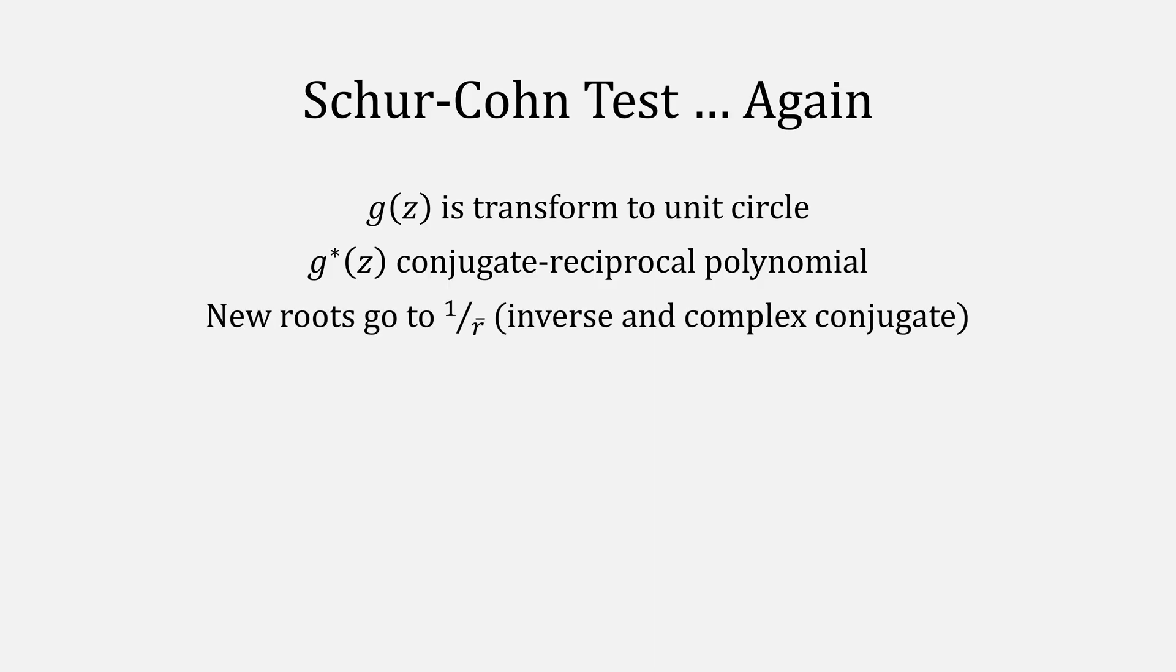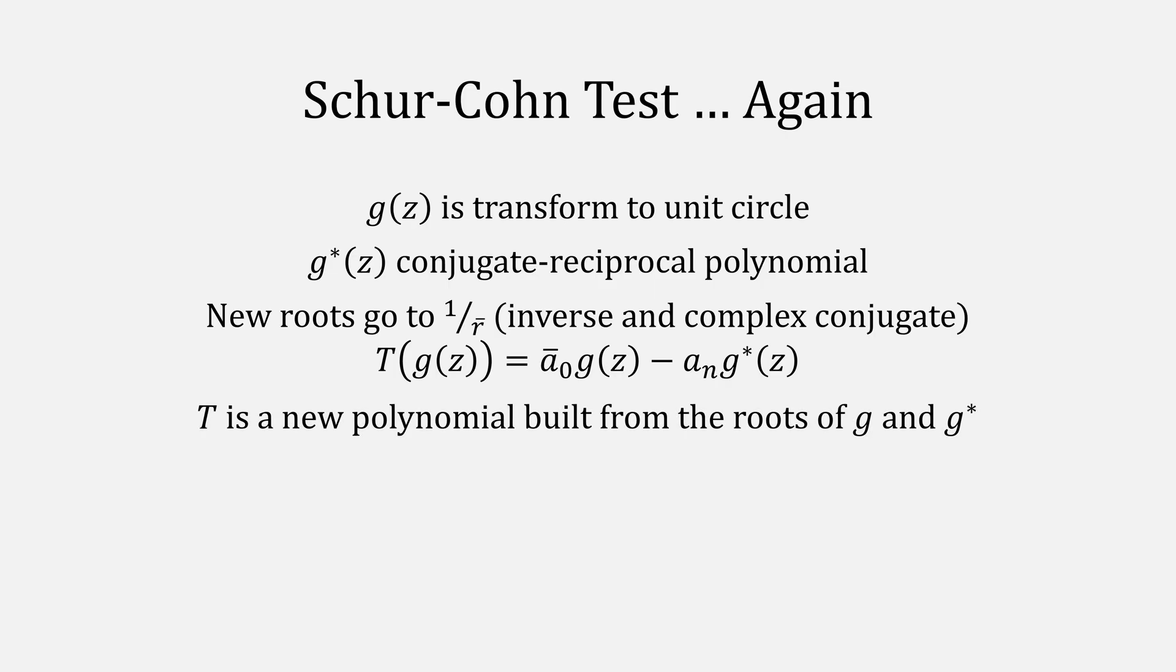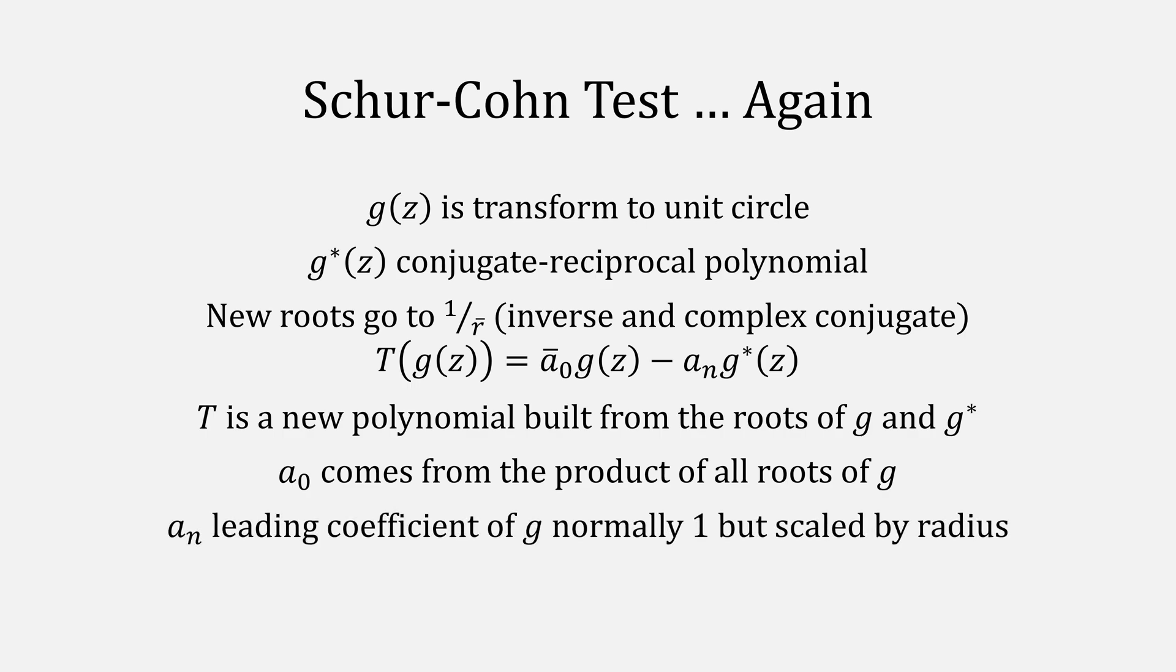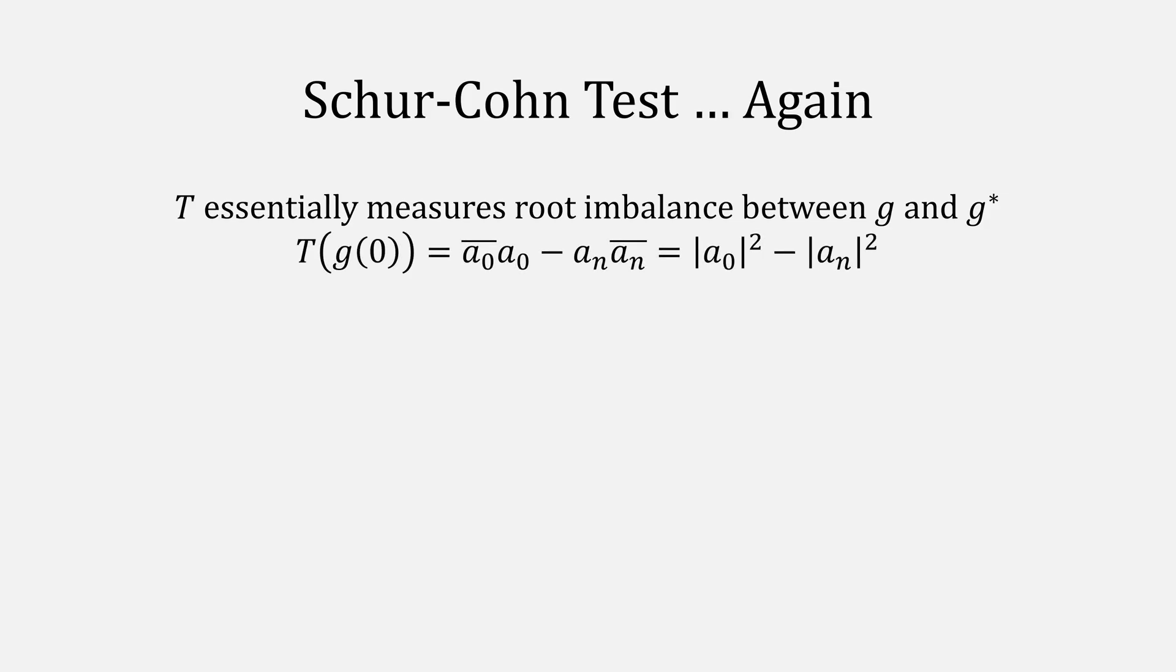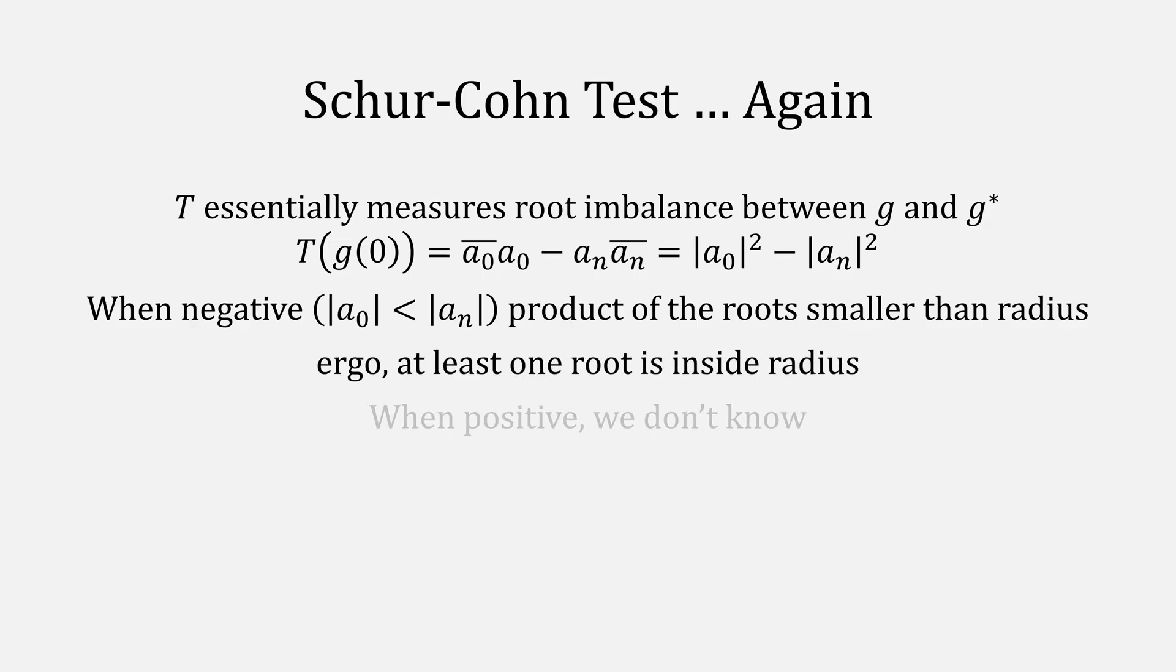To sort of recap, our g equation is a transformation to the unit circle, requiring a radius and a center. G star is technically the conjugate reciprocal polynomial, meaning all of its new roots are inverses and complex conjugates of g. Our t function is a mapping that uses the roots of g and g star. Recall that a star means it's the product of all the roots of g, the constant term. The leading coefficient a sub n would normally be 1, but it's been scaled by the radius. This means t is essentially measuring the root imbalance between g and g star. Plugging in 0 cancels a lot of terms, basically giving us the difference between a 0 and a sub n. When that is negative, the product of all the roots are smaller than the radius. This means at least one root is inside the radius. When it's positive, it means we don't know. One of the roots might be too large, and it's messing with the product. This means we simply just try t again.